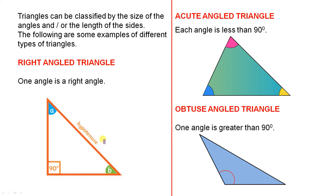You'll see here that I've included the word hypotenuse. In a right angled triangle, the side which is opposite the right angle — which is that one — is the longest side and is called the hypotenuse.